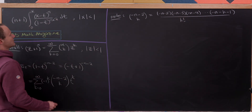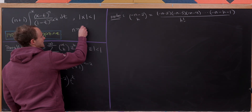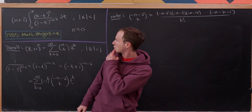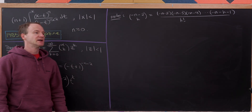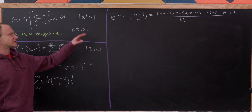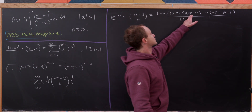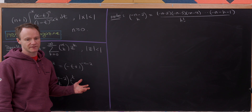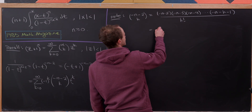Let's add the assumption that n is greater than or equal to 0. Under this assumption, minus n minus 2 and all terms in the numerator are negative, so we can factor out minus 1 from each of the k terms, giving minus 1 to the k out front.